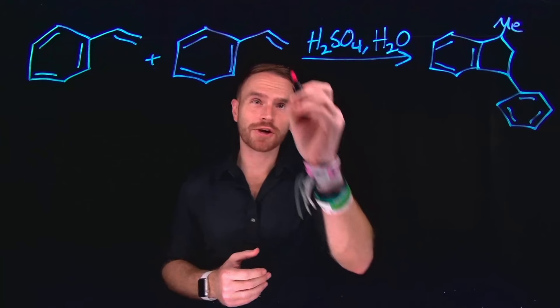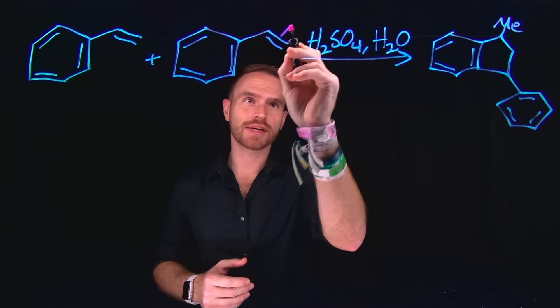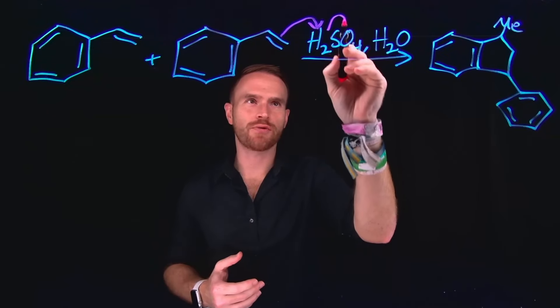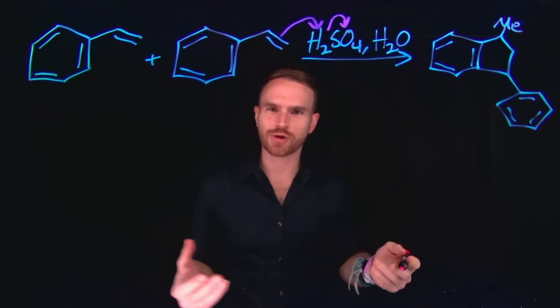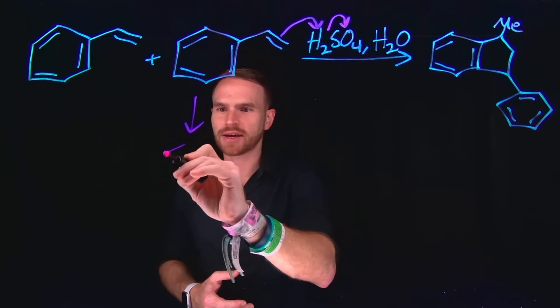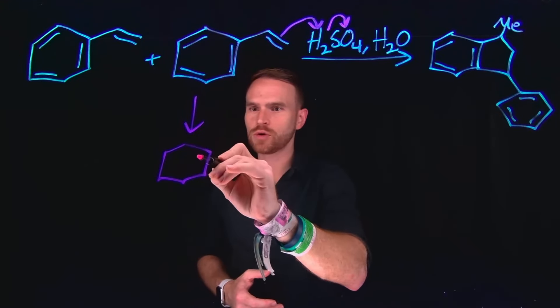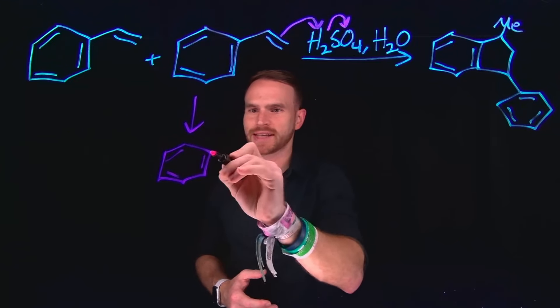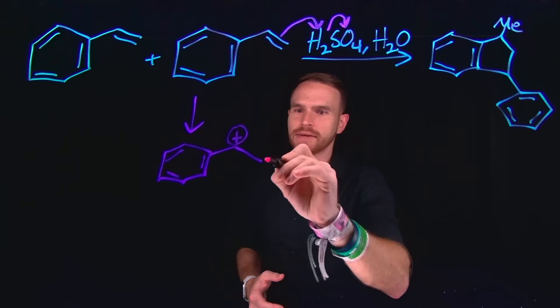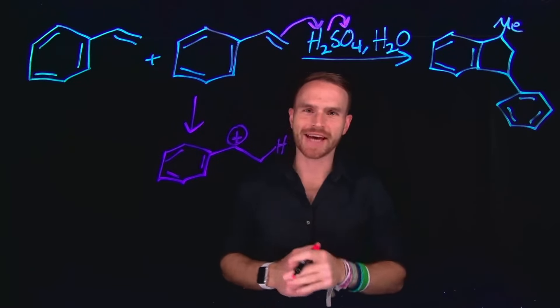The first step in this mechanism is going to be protonation by using this alkene to abstract a proton from H2SO4, which will kick over the electrons, leaving behind HSO4 minus. And this is going to generate a carbocation, which we will use as an electrophile in the next step. So this is going to leave a secondary carbocation, meaning that this position was the one that was protonated by the acid.